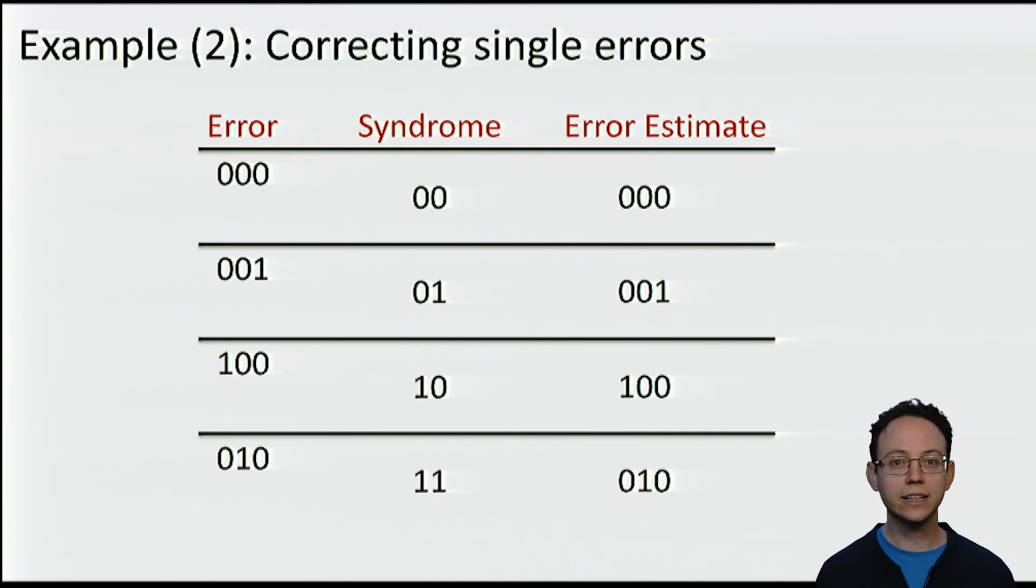Can you guess why we chose this particular map? The idea is that if there is no error, we will output the correct error estimate, but also if there is any error string with just one error. However, this also means that any other error string will be wrongly corrected. Summarizing, the code that we have proposed corrects all error strings of 0 or 1 errors.